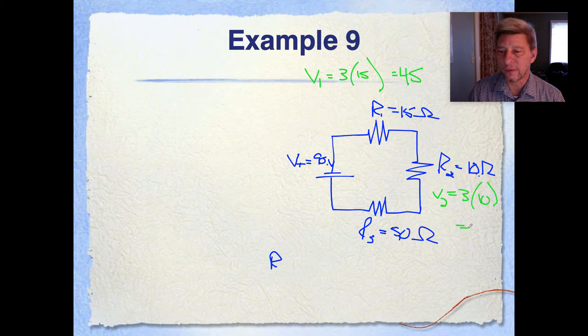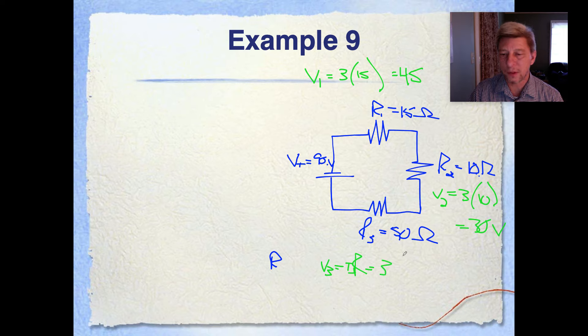My resistance here for V2 is going to equal three amps times 10 ohms, this is awfully bright, I'm sorry, 30 volts. And here, V3 is going to equal I3 times R3, which is going to be three amps times five ohms, which is 15 volts.